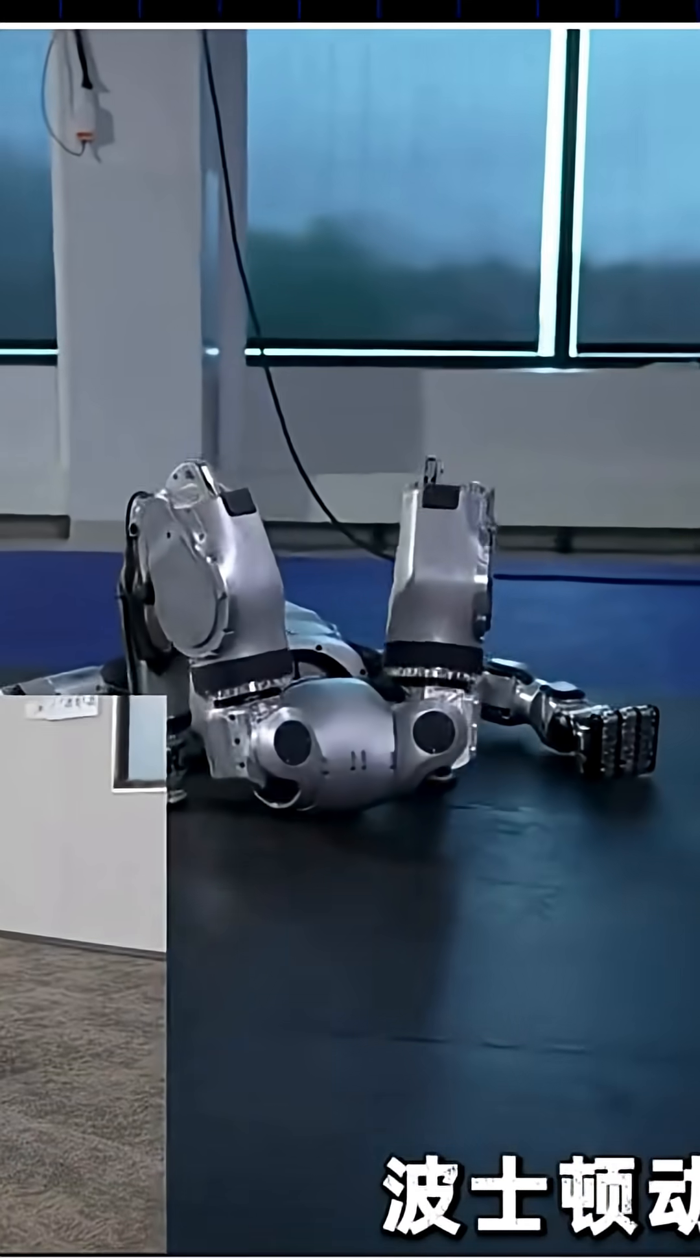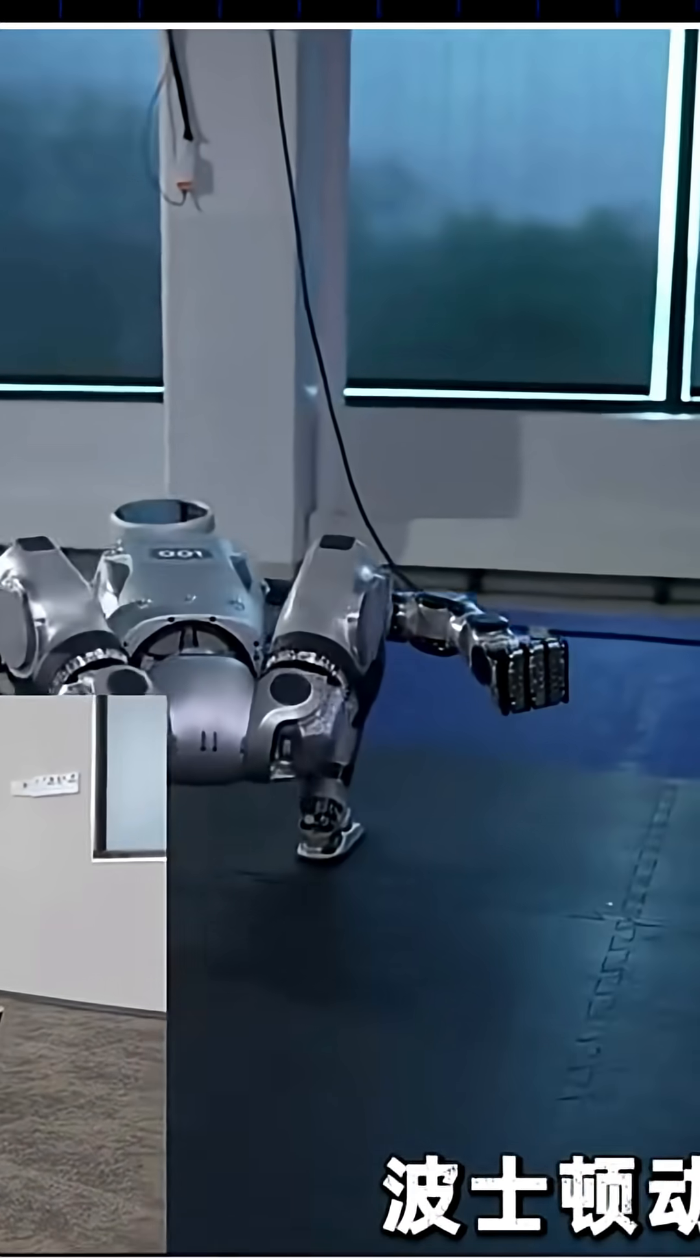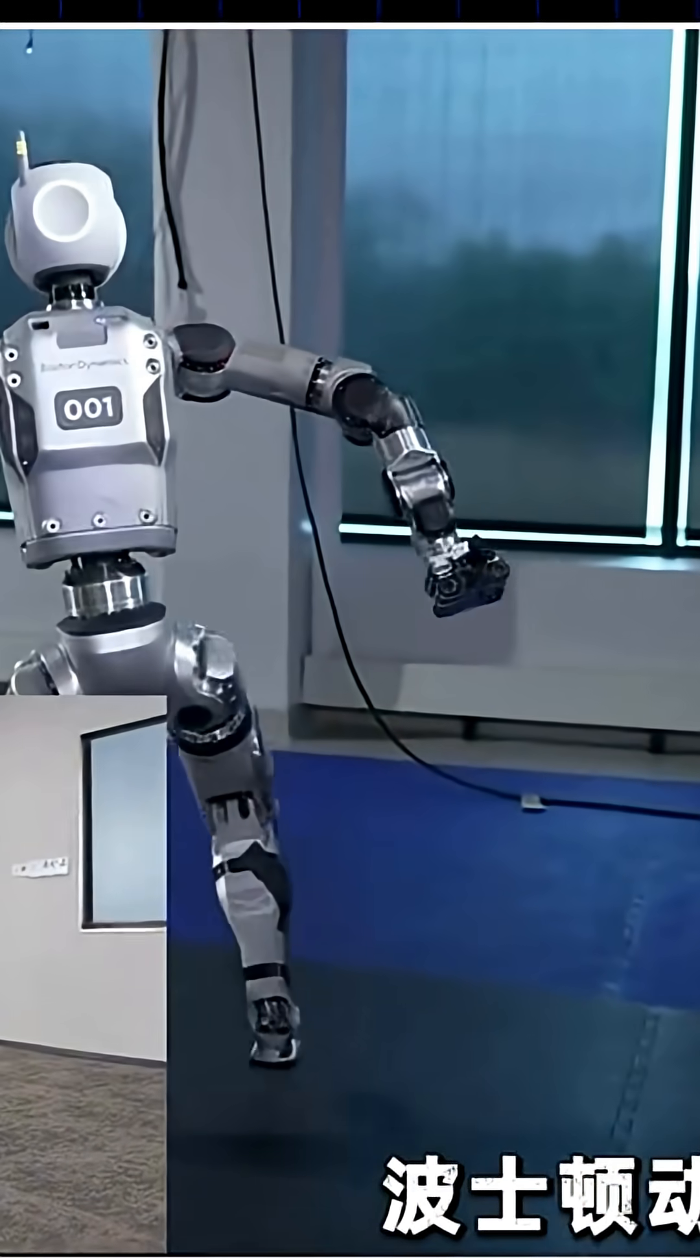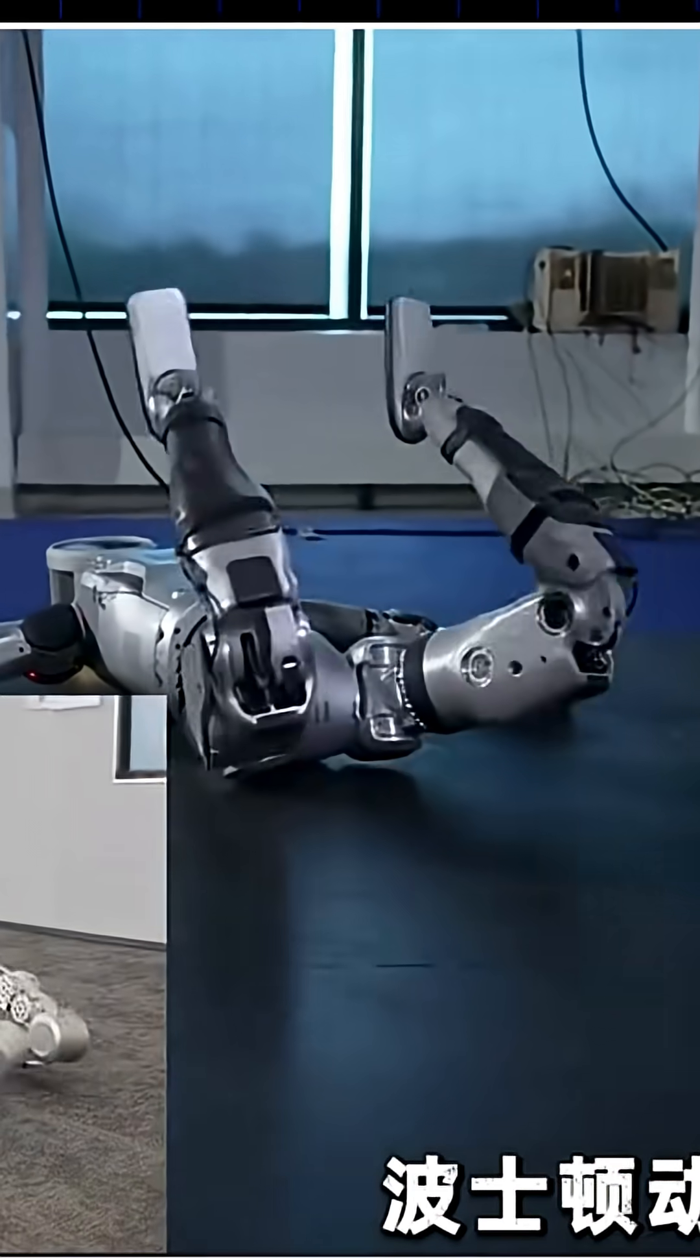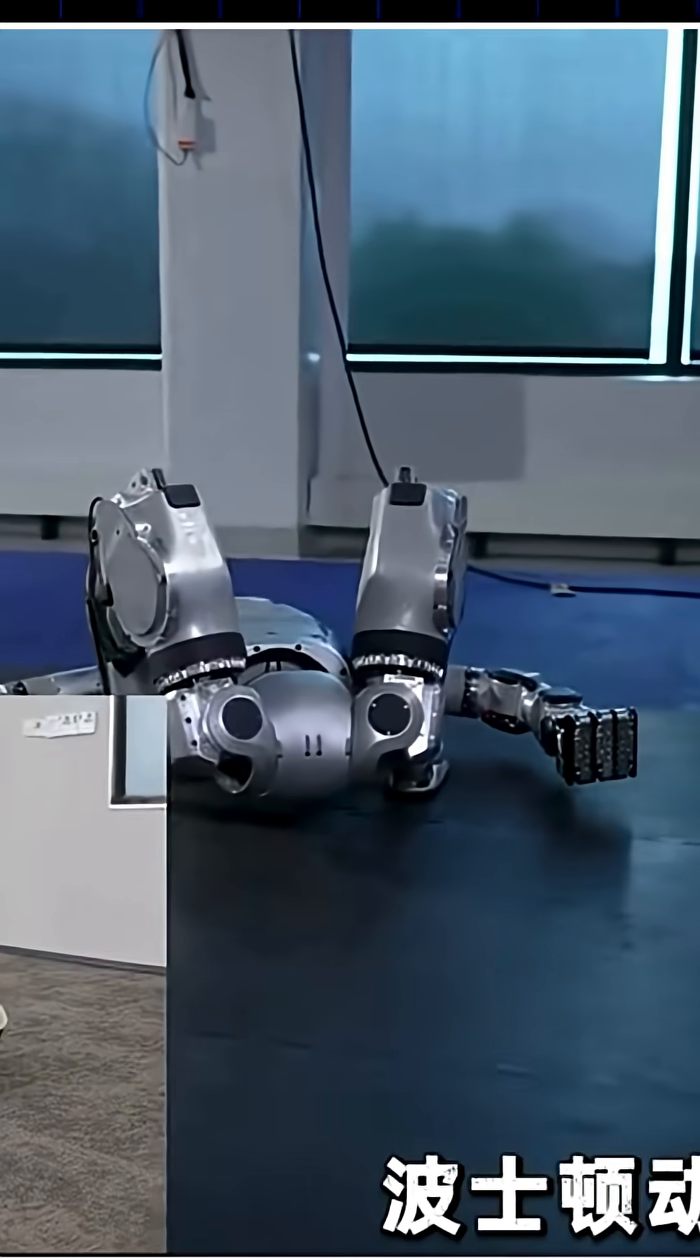This is because Zhuji Dynamics robot's lower limbs use high-force, high-density joints. Simply, within limited space, they made joints compact yet powerful.